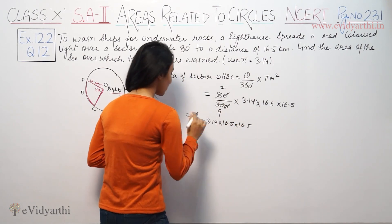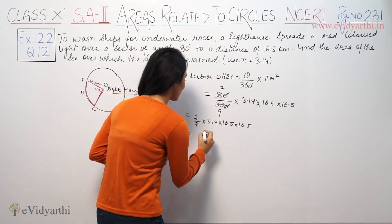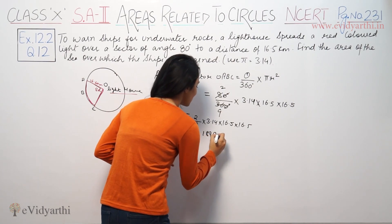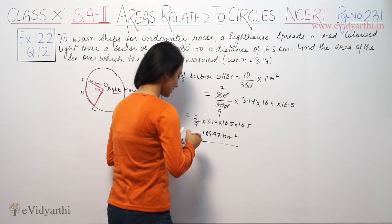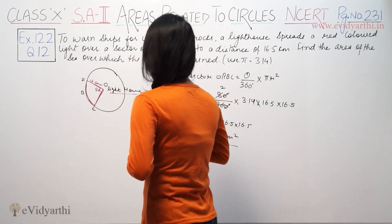So these values you have to solve and the answer will be 189.97 square kilometers. So this is the area covered by this lighthouse.